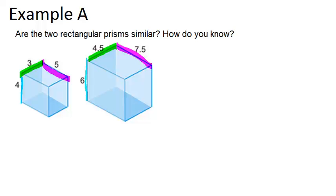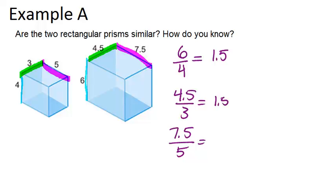So we'll test 6 over 4 and see what that equals, and compare it to 4.5 over 3, and finally compare that to 7.5 over 5. Now if you change all of these to decimals, you find that they all equal 1.5. So that means all these ratios are equivalent. And because all the corresponding sides are in the same ratio, you can say yes, these two rectangular prisms are similar.